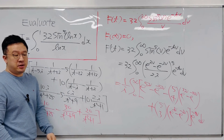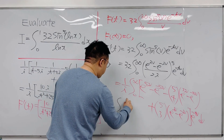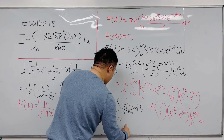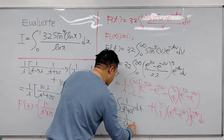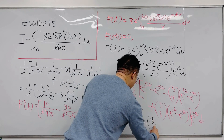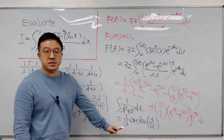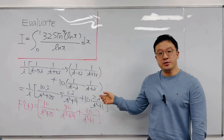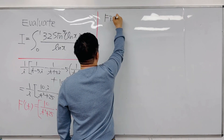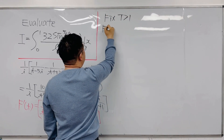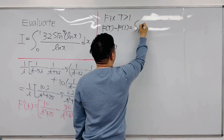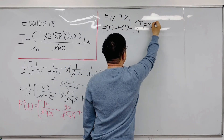From this, I'll use the standard result: the integral of 1/(t²+a²) dt equals (1/a) arctan(t/a). Fixing capital T greater than 1, we can write F(T) − F(1) = integral from 1 to T of F'(t) dt.